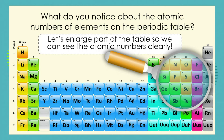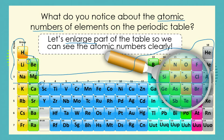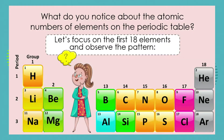We know that the patterns mean something, but we're also going to focus on atomic numbers of elements on the periodic table. So instead of seeing the whole periodic table, we're going to enlarge just part of the table so that we can see the atomic numbers very clearly. We're going to focus on just the top part and ignore the bottom part for the moment.